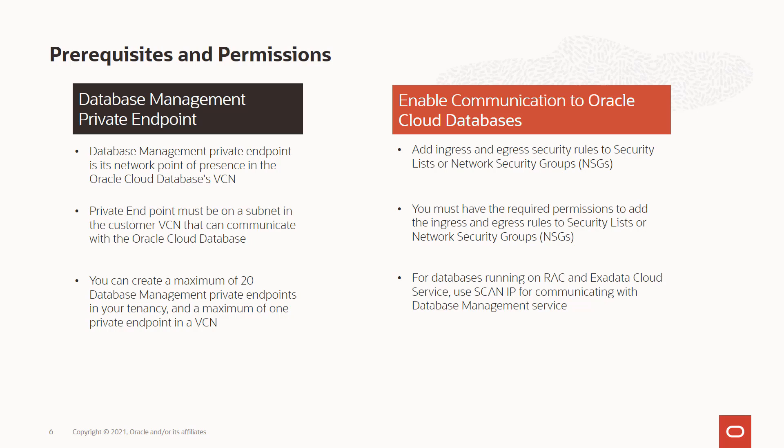Once you have permissions to create the database management private endpoint, the next step is to enable communication between database management and the Oracle Cloud Databases. You need to add ingress and egress rules, either in security lists or network security groups. You should either work with your network administrator or have the required permissions to add these rules. For databases running on Oracle RAC and Exadata Cloud Service, you should use a scan IP for communicating with the database management service.